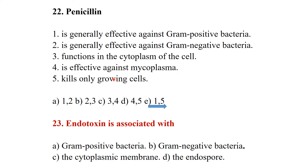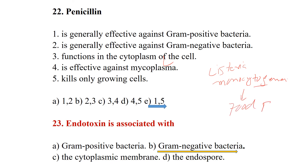The only gram-positive bacteria that produce endotoxin is Listeria monocytogenes. Listeria monocytogenes causes food poisoning and is the only gram-positive bacterium that has endotoxin. Apart from this, endotoxin is mainly a characteristic property of gram-negative bacteria.